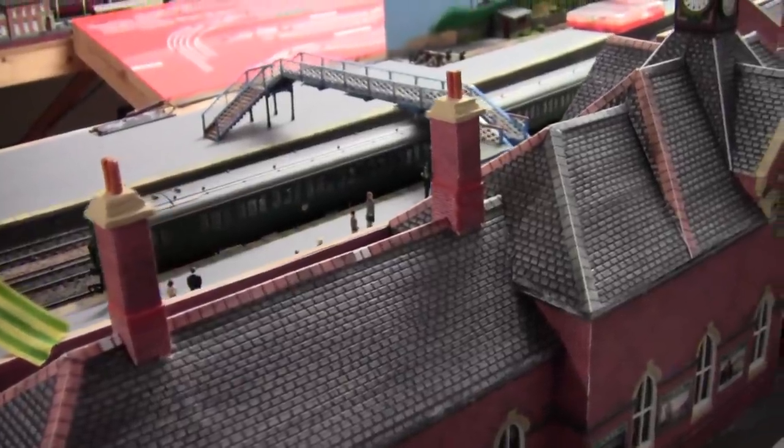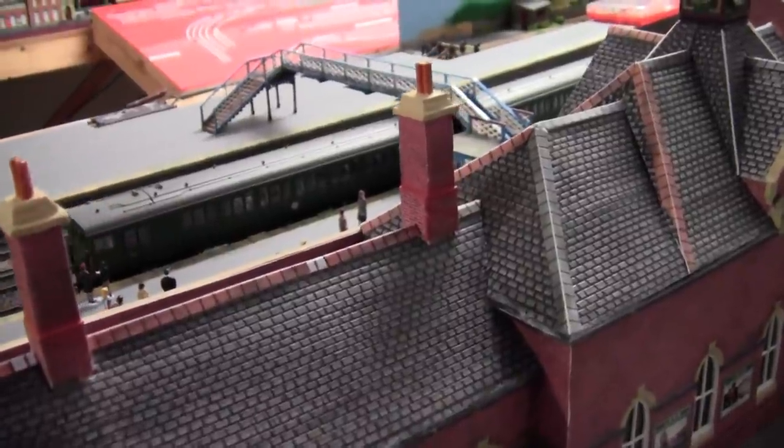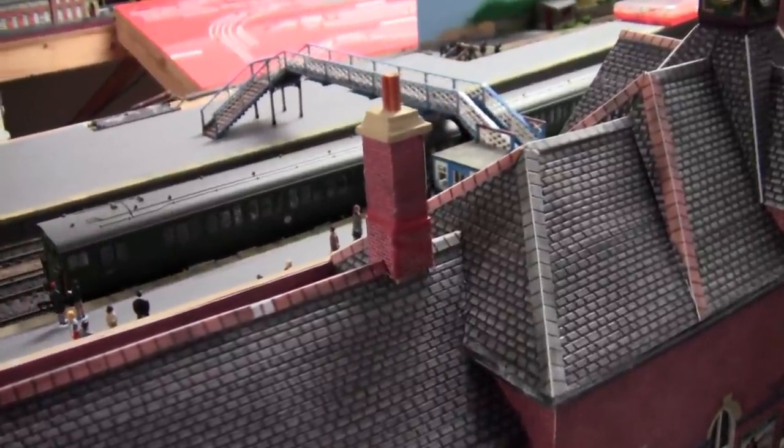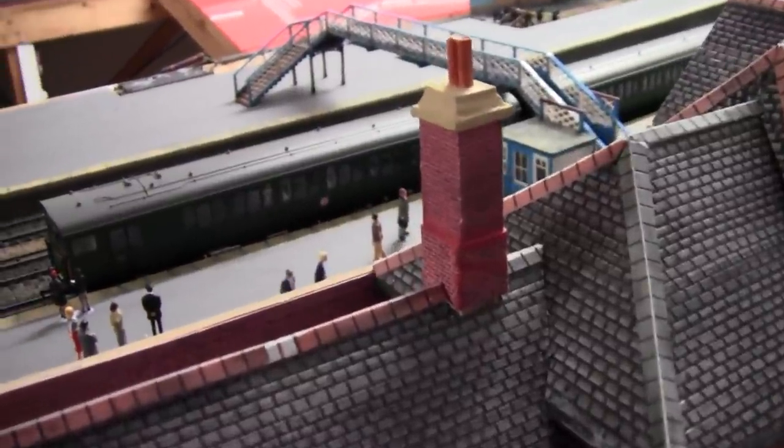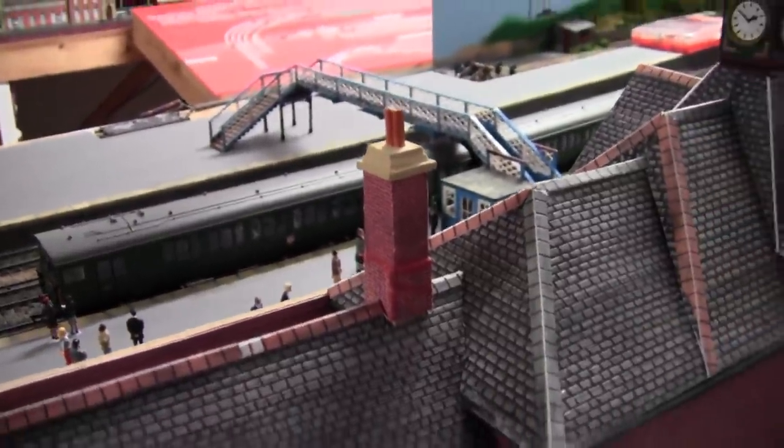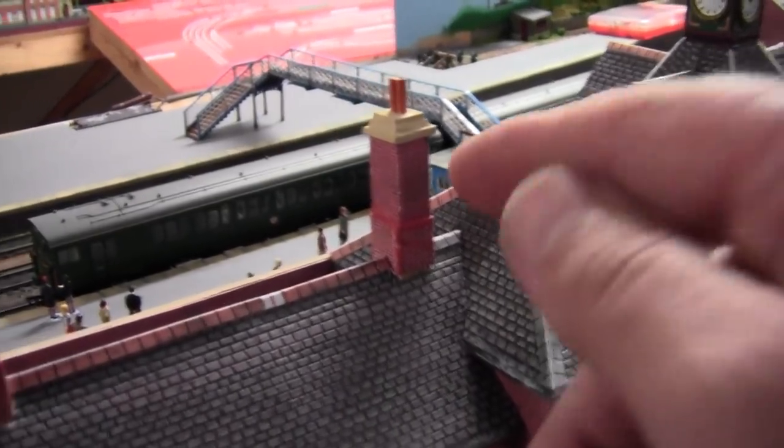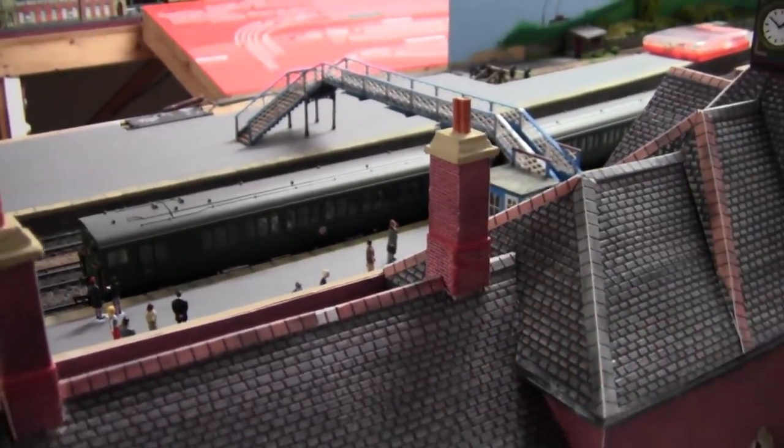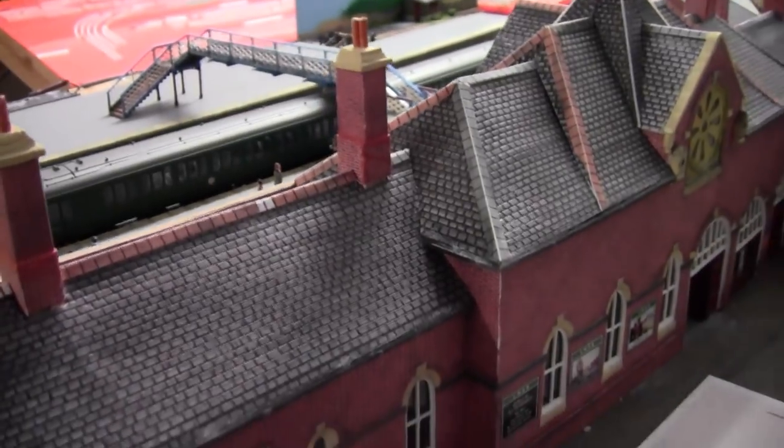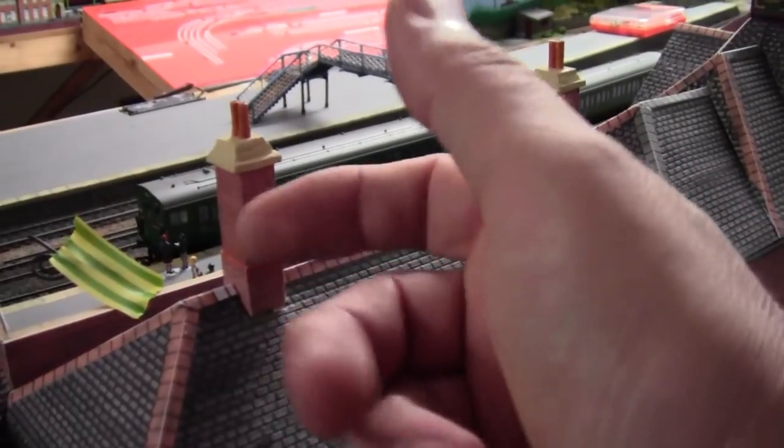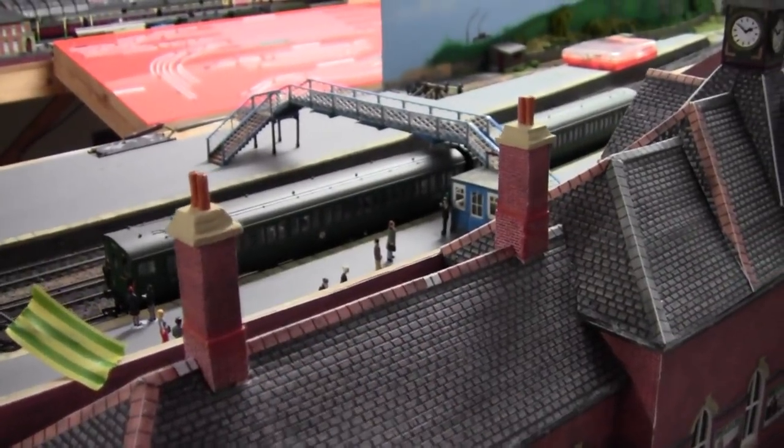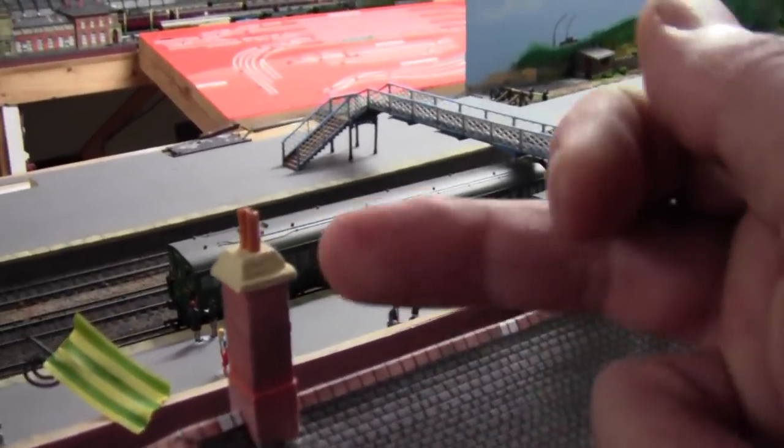So for repairing Metcalfe kits as the chimney pots get knocked off, I think that would work quite well with the toothpicks going into a solid chimney. Now Super Quick kits haven't got a solid chimney—they're normally hollow.